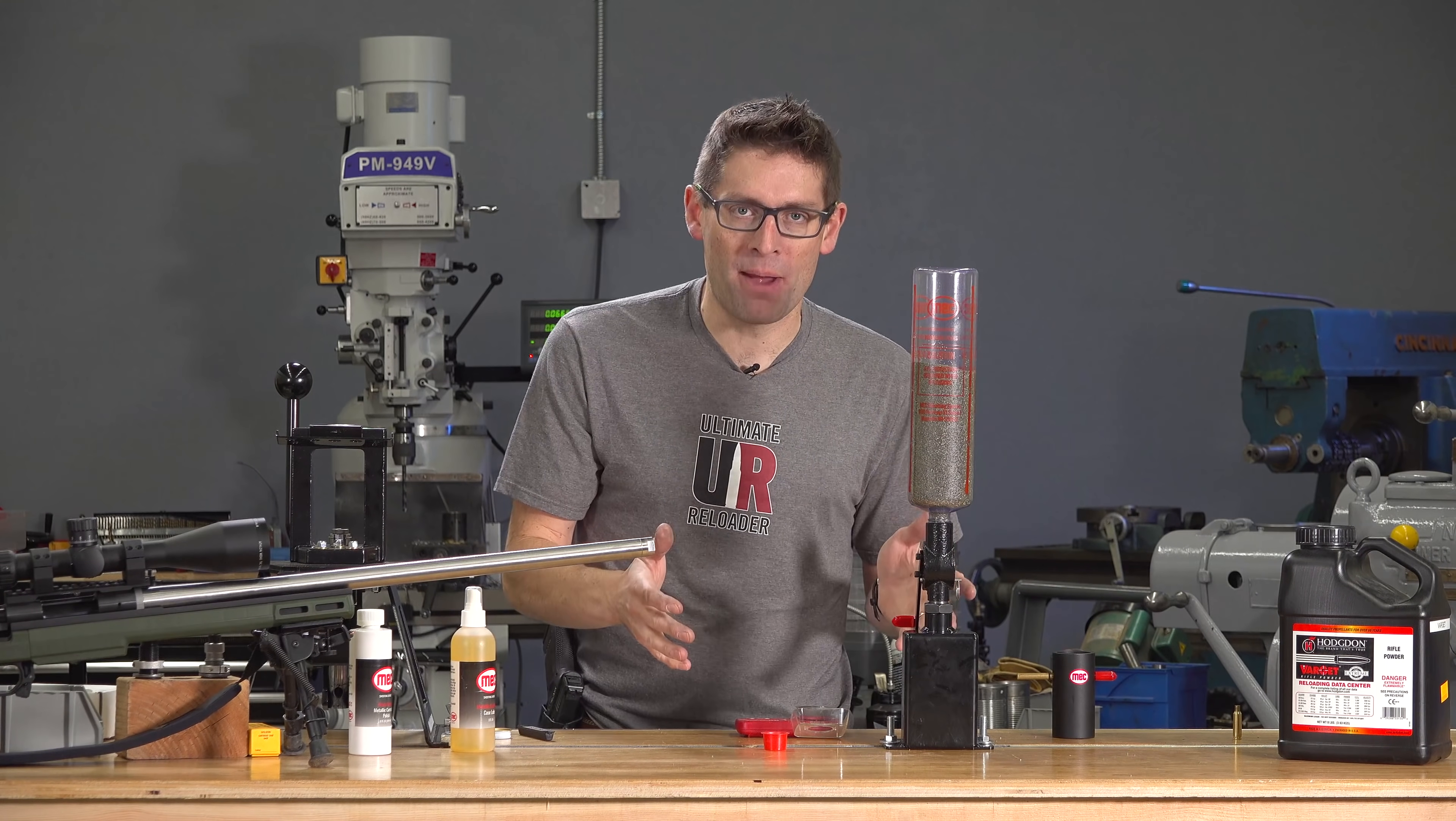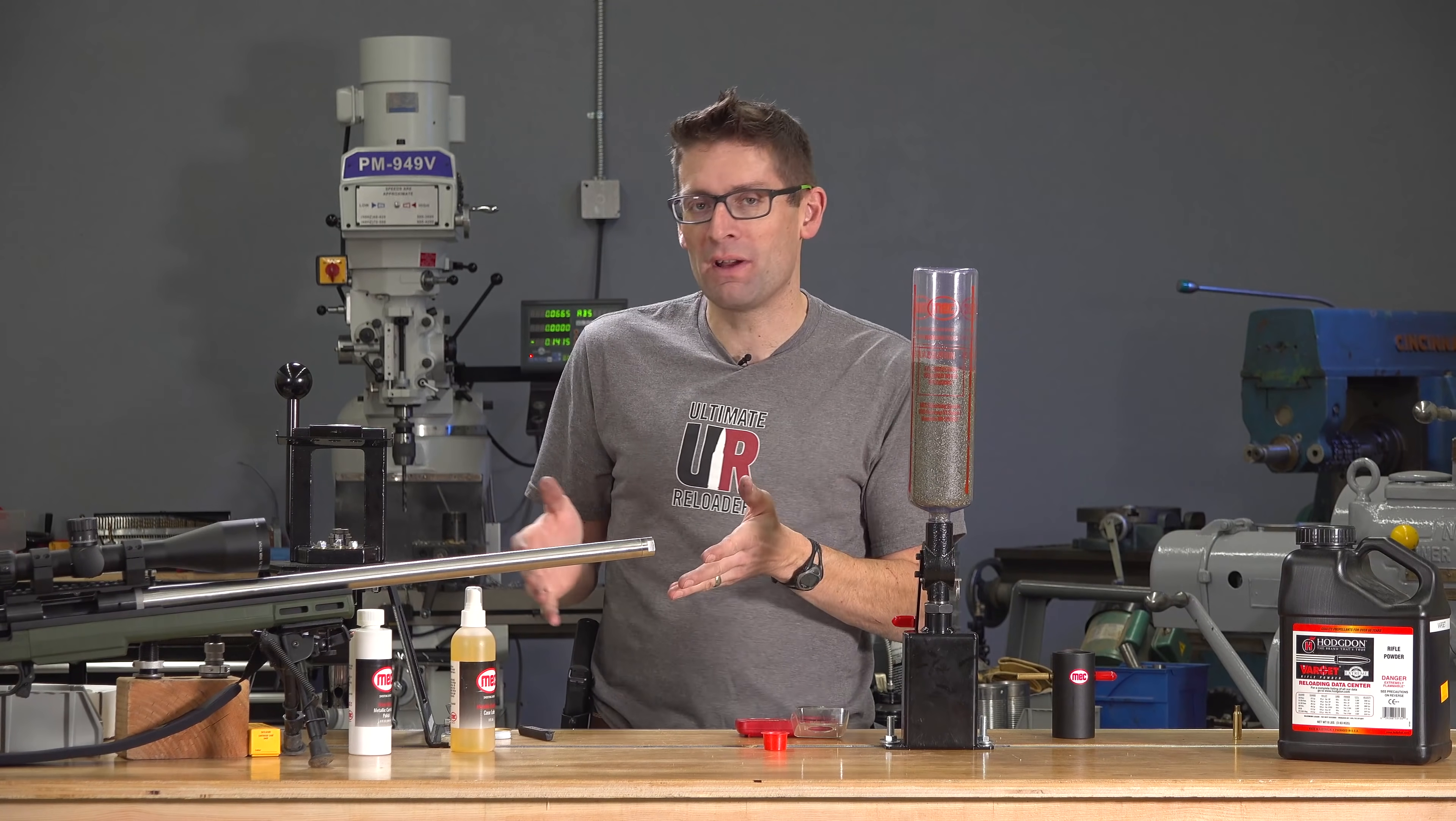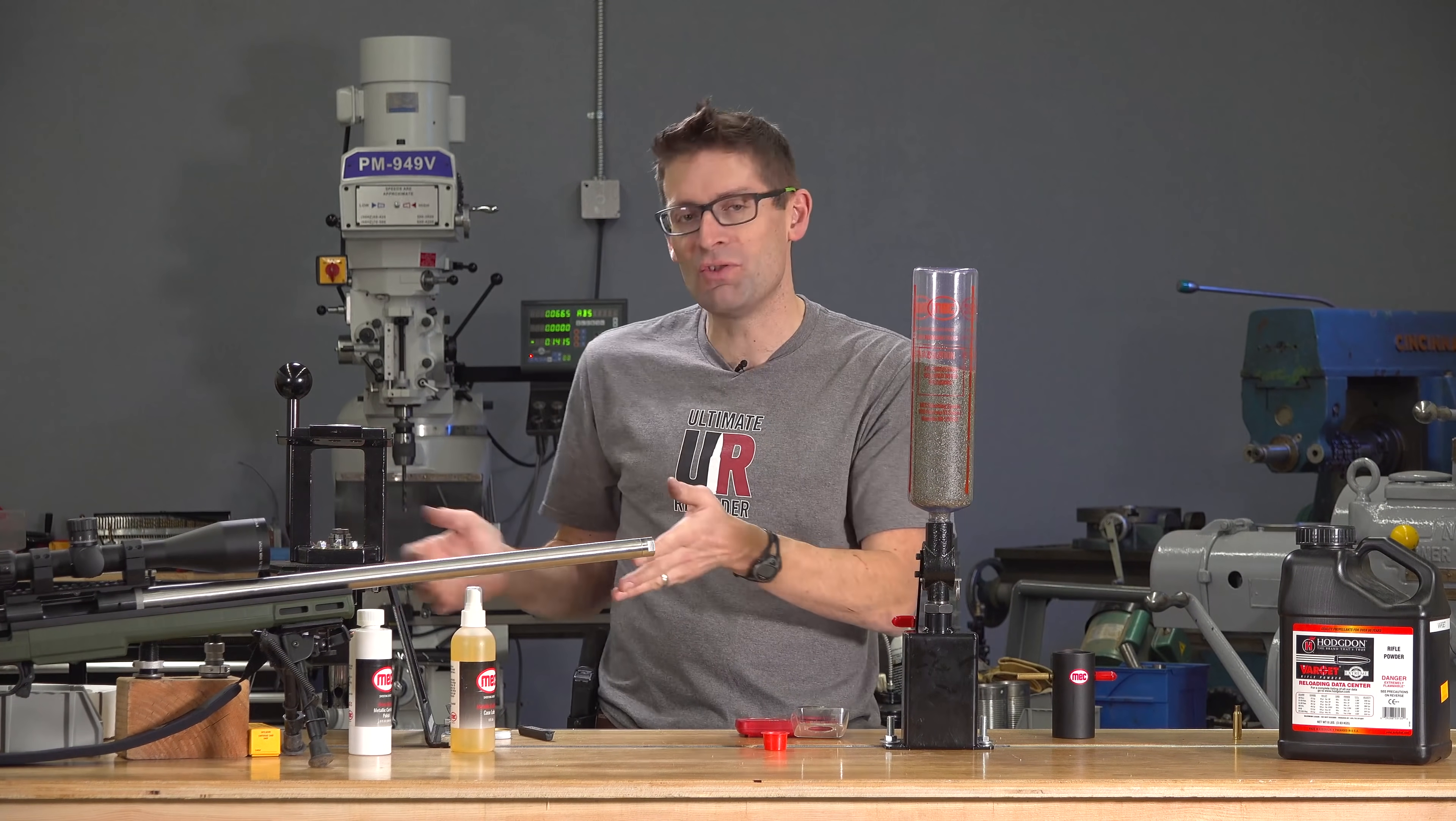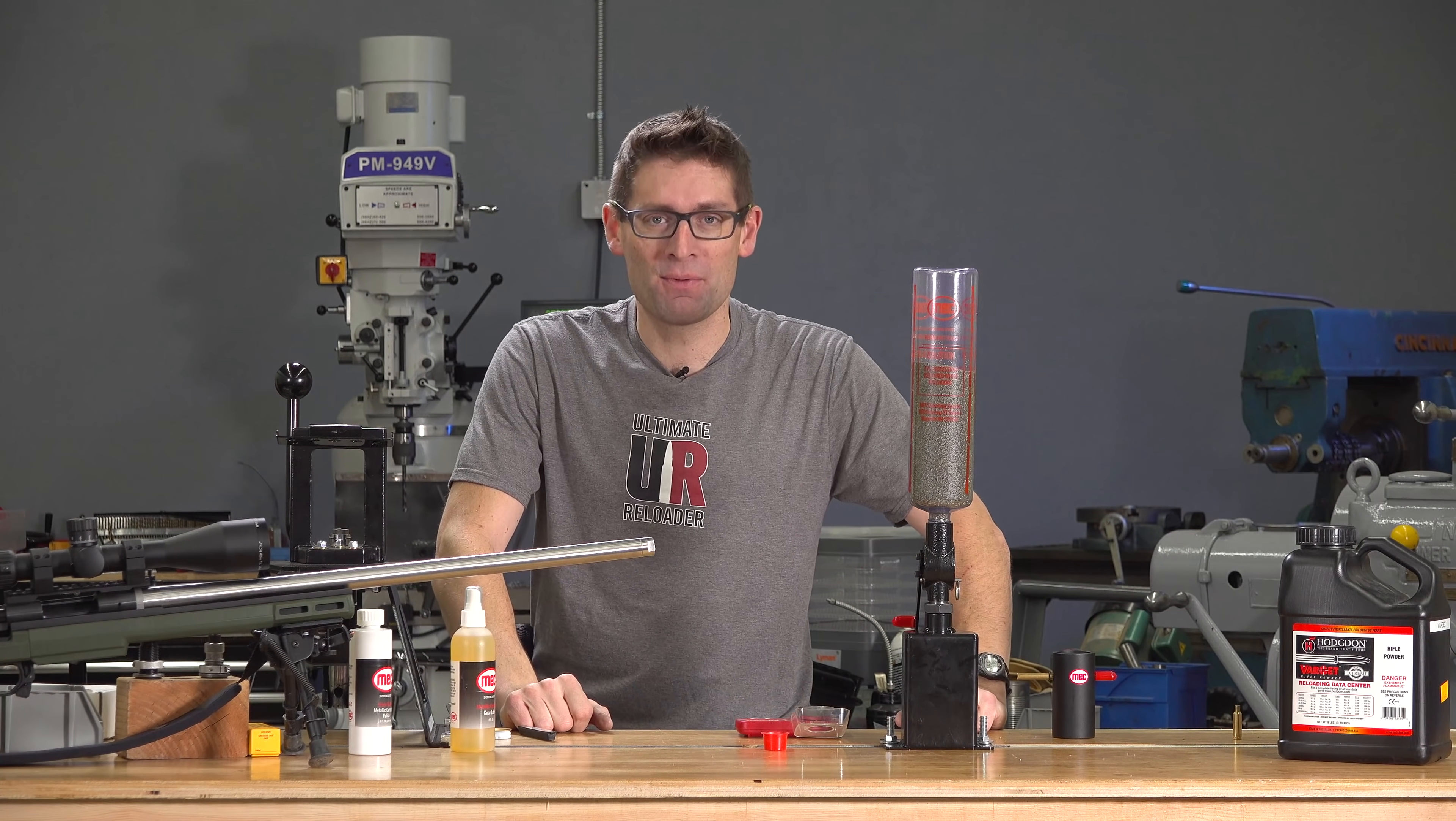So, there we go. A quick look at the Mech Benchtop Powder Measure. And, like I said, I'm gonna be using this in the next follow up video where we're gonna be looking at precision loading end to end for 224 Valkyrie. That's gonna be a lot of fun. If you liked this video please give it a thumbs up and if you don't wanna miss any of the action here on Gavintube and Ultimate Reloader like 224 Valkyrie reloading content make sure you're subscribed to the channel with notifications. Until next time, happy shooting and happy reloading.